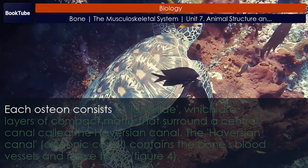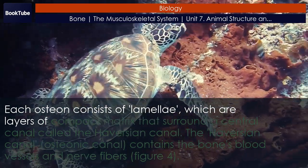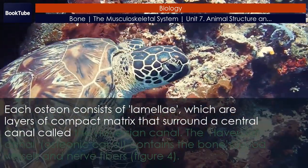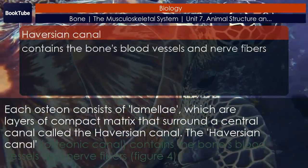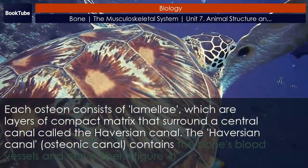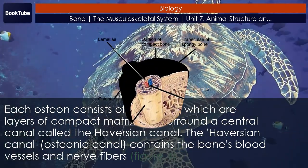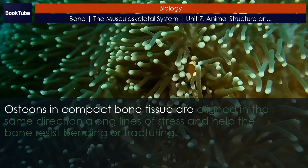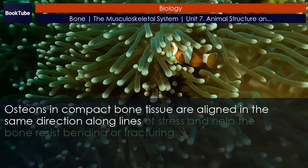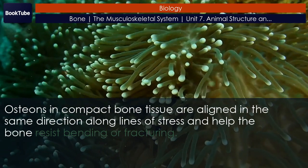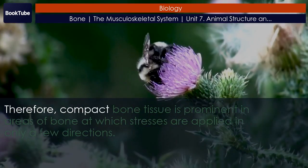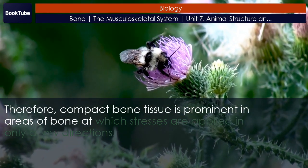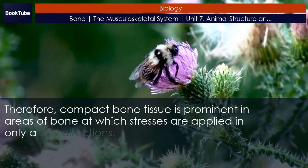Each osteon consists of lamellae, which are layers of compact matrix that surround a central canal called the Haversian canal. The Haversian canal, or osteonic canal, contains the bone's blood vessels and nerve fibers. Osteons in compact bone tissue are aligned in the same direction along lines of stress and help the bone resist bending or fracturing. Therefore, compact bone tissue is prominent in areas of bone at which stresses are applied in only a few directions.